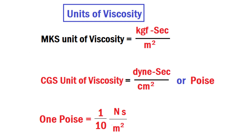One poise equals 1/10 newton·second per meter square, or 10⁻¹ N·s/m². This is useful for mechanical competitive exams. Now we will discuss the variation of viscosity with temperature.